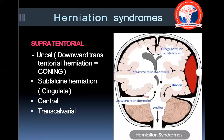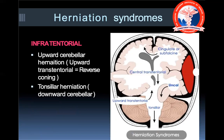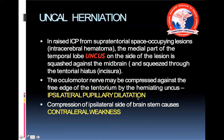Looking at the figure, the uncus herniates from the supratentorial region to the infratentorial region through the tentorium. In infratentorial herniation, the cerebellum from below the tentorium herniates upward to a position above the tentorium. Regarding uncal herniation specifically, the oculomotor nerve is compressed against the free edge of the tentorium by the herniating uncus, leading to ipsilateral pupillary dilatation.